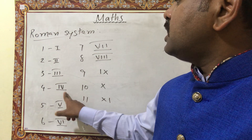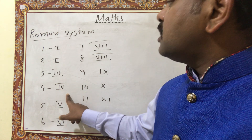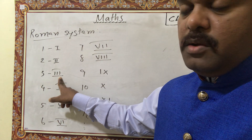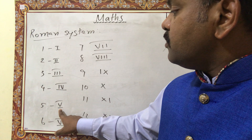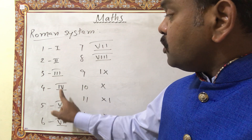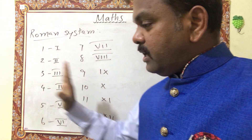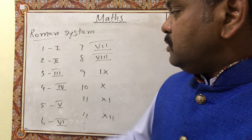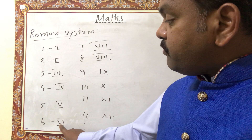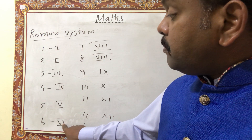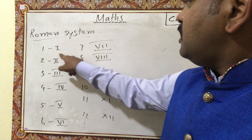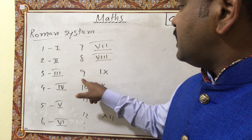Why not four I's for 4? There is a condition: we should not use I more than 3 times. So for 4, we write 5 minus 1 — that is IV. For V, 5 is V. The rule is: if it is minus, write the symbol on the left side; if it is plus, write it on the right side. So 6 is VI (5 plus 1 on the right), 7 is VII, 8 is VIII, and 9 is IX (10 minus 1, I on the left of X).